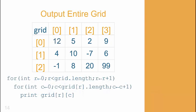To output the entire grid, use a nested loop process, as you see here, with the outside loop controlling the row and the inside loop, the columns. Look carefully at this example, as it outputs each element in the grid.